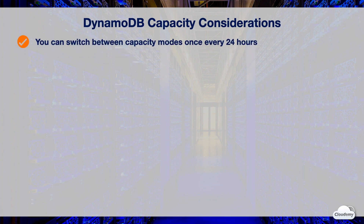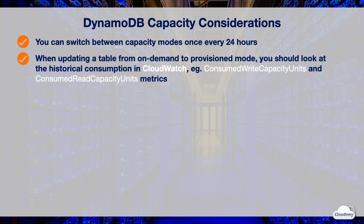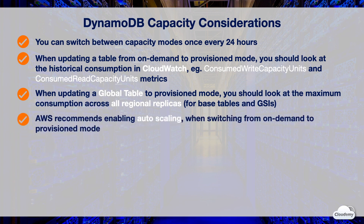You can switch between capacity modes once every 24 hours. When you switch from on-demand mode to provisioned mode, you should review historical consumption in CloudWatch — such as consumed write capacity units and consumed read capacity units metrics for the table and GSIs — to determine the new throughput settings. When you switch a global table to provisioned mode, look at the maximum consumption across all regional replicas for base tables and GSIs to determine the new settings. AWS recommends enabling auto scaling when switching from on-demand mode to provisioned mode.